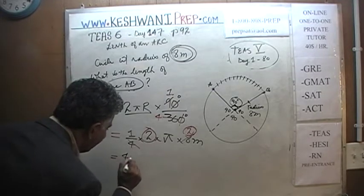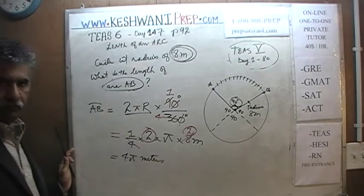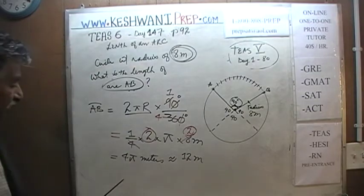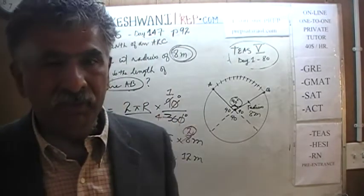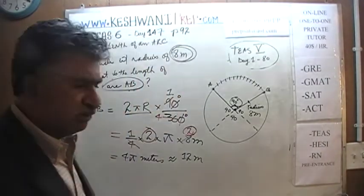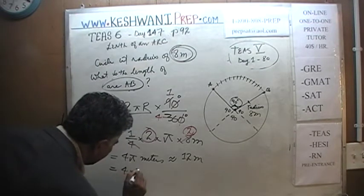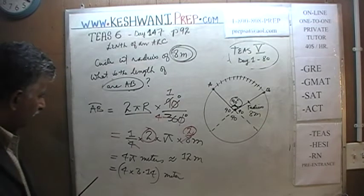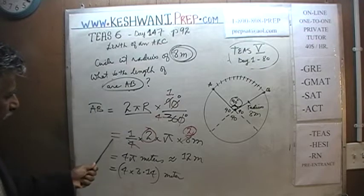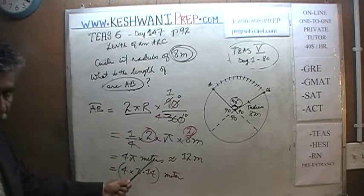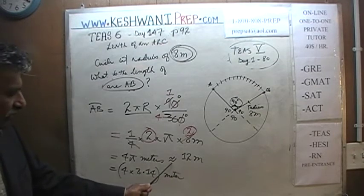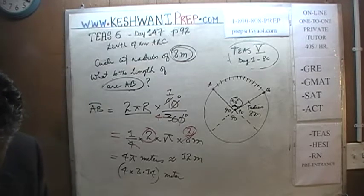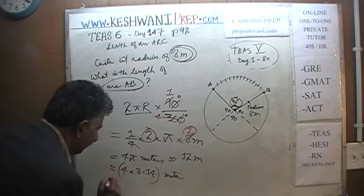The length is 4 pi meters. You can leave it like this, or we can say it is approximately 12 meters — because pi is approximately 3.14, and we can approximate pi as 3. Or more precisely, 4 times 3.14 meters. Note: once we replace pi with a numerical value, we can no longer use an equals sign — we have to say approximately equal to. Pi is not exactly equal to 3.14, so we must write the approximately equal symbol.